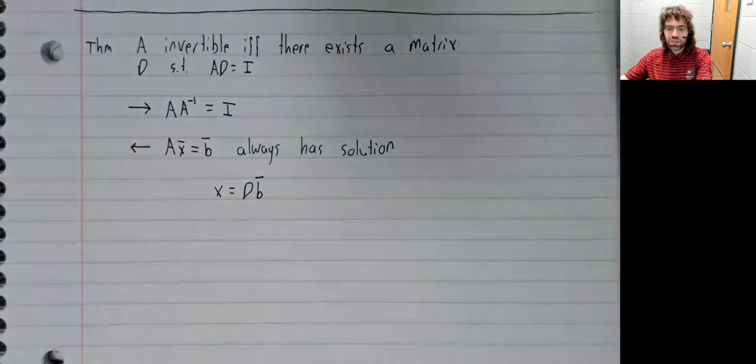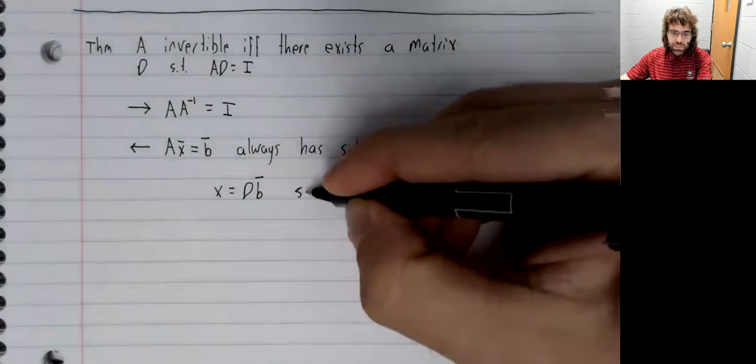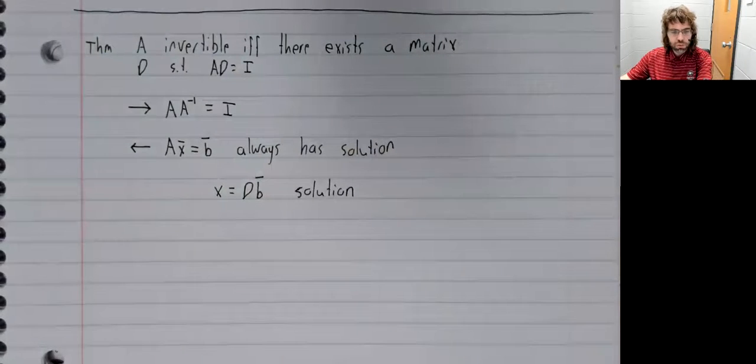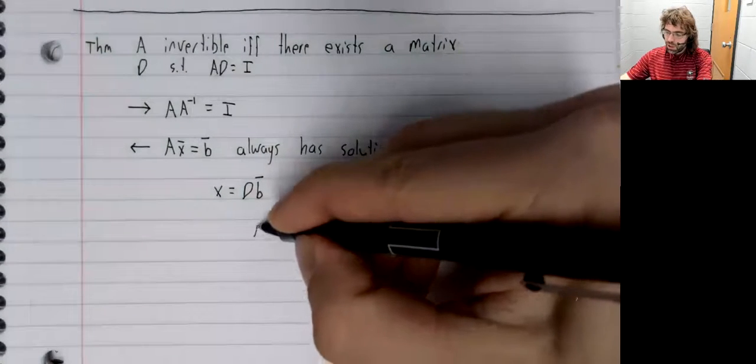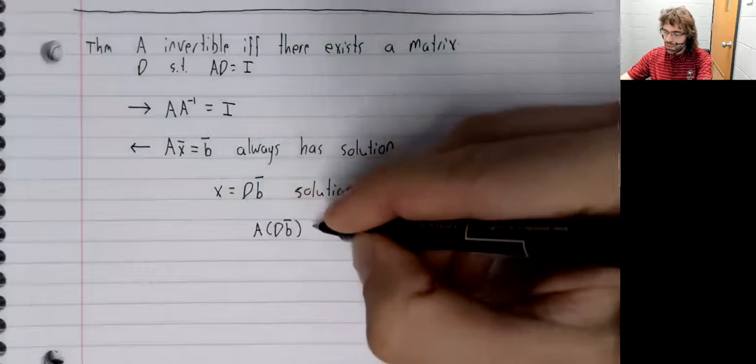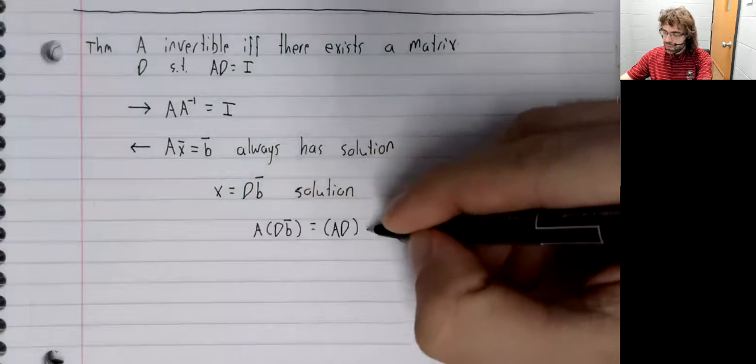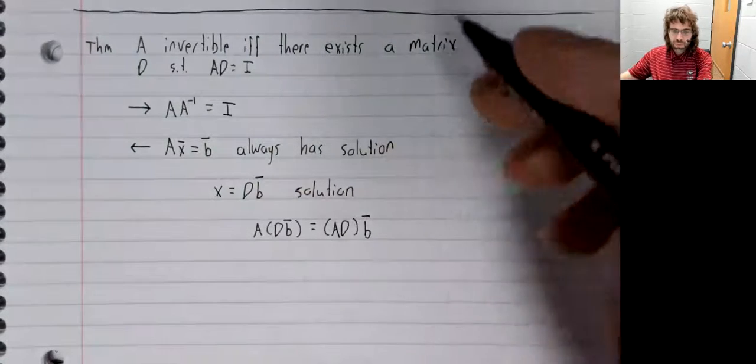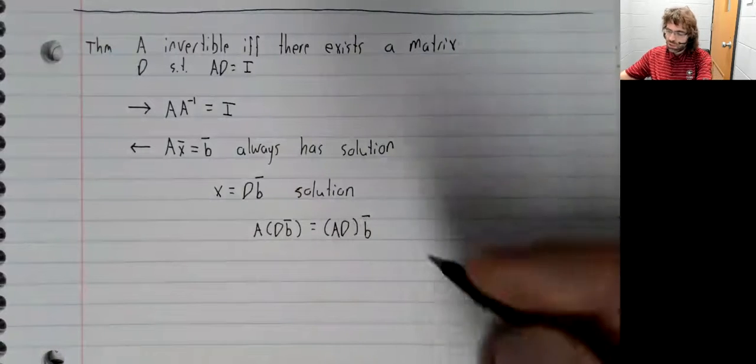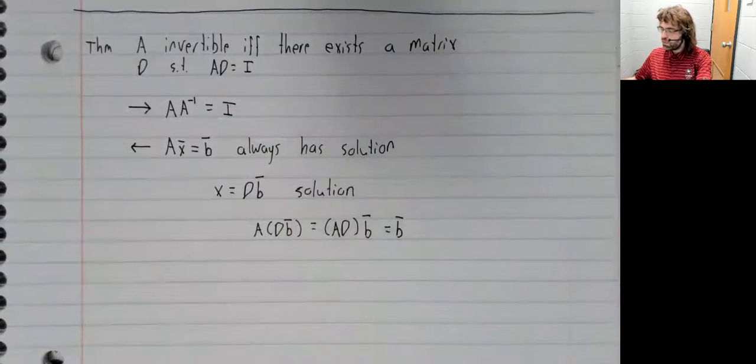In particular, x equals D times B is a solution. Because A times D B equals A D times B. This is the identity. The identity times B is B.